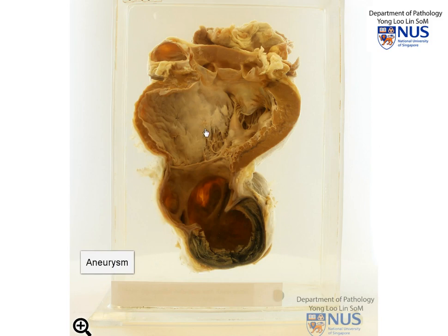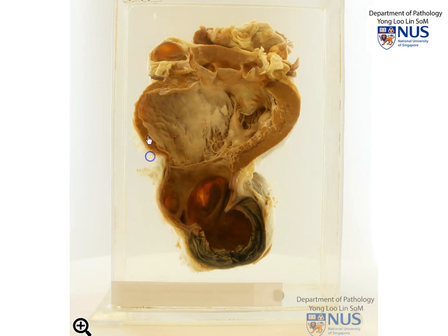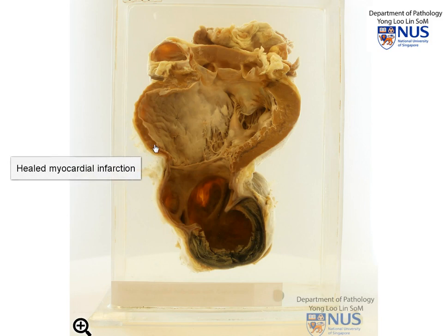Can we tell by looking at the specimen what caused the aneurysm? Actually, we can. If you notice, you'll see that the wall of the left ventricle here is much thinner than over this area. So this part is relatively normal, but over here the wall is very thin because there was a previous myocardial infarction or heart attack, the tissue died, and then there was healing.